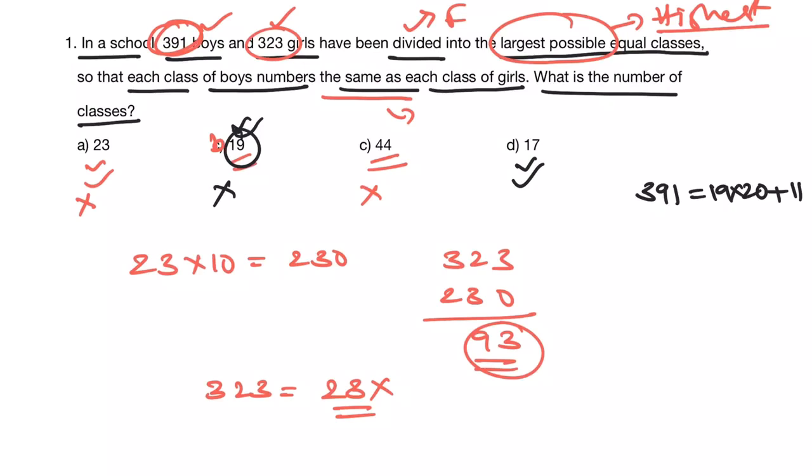Now you are left with option D. Option D is going to be your answer. Let's verify this, whether 391 is multiple of 17 or 323 is multiple of 17. 391 by 17: 17 ones are 17, twos are 34. You have 51. 17 threes are...that means 17 into 23. So 17 is the factor of 391.